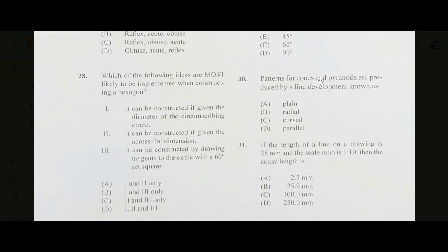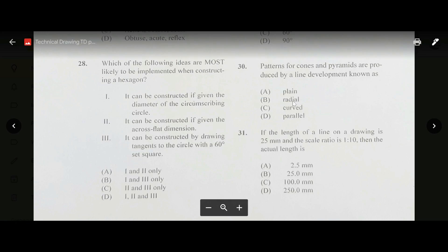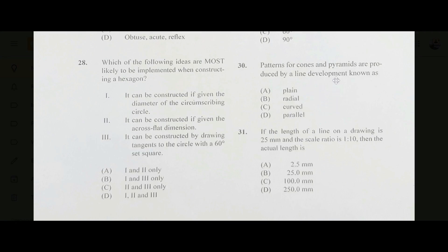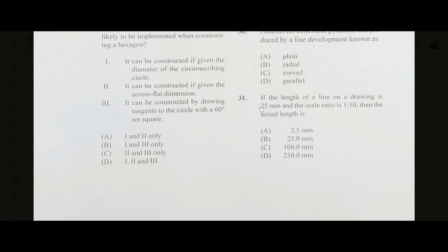Number thirty: patterns for cones and pyramids are produced by a line development known as radial — answer B. The lines start from the center and radiate outward, hence they are called radial lines. Number thirty-one: if the length of a line on a drawing is 25 mm and the scale ratio is 1:10, the actual length is 25 × 10 = 250 mm. The answer is D, 250.